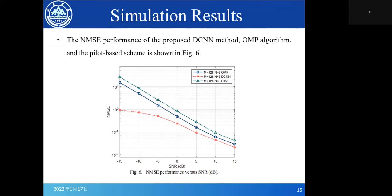The NMSE performance of the proposed DCNN method, OMP algorithm, and the pilot-based scheme is shown in Figure 6. It's found that DCNN method performs much better than OMP algorithm and the pilot-based scheme because the DCNN method is a non-linear estimator that can learn the noise features and eliminate the noise. In addition, the DCNN method outperforms the other two conventional schemes, especially in the case of low SNR. This is because the DCNN method can realize better noise feature extraction and achieve noise cancellation when the noise interference is strong.